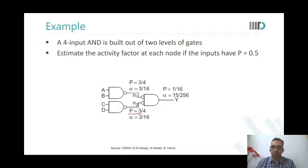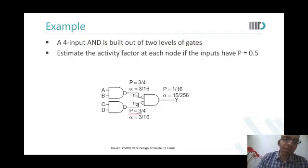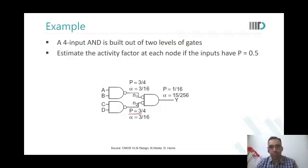Alpha for any node is always p times p-bar, where p is the probability of a node being equal to 1. The value of p depends on the inputs to that node.